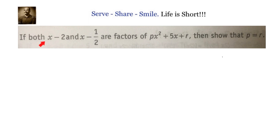If both x minus 2 and x minus 1 by 2 are factors of px squared plus 5x plus r, then show that p equals r. Since both are factors of the given polynomial, we have to prove the condition that p equals r.